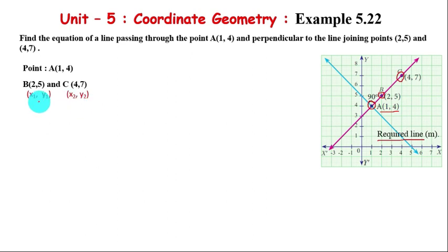First, find the slope of the red color line BC. The slope of line BC is m1 = (y2 - y1)/(x2 - x1). Putting the values: (7 - 5)/(4 - 2) = 2/2 = 1. The slope of the red color line is 1.